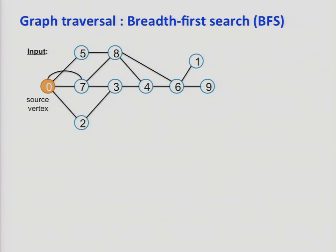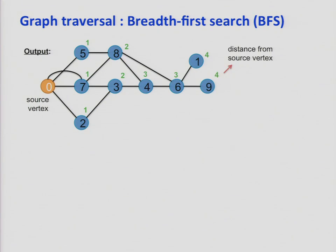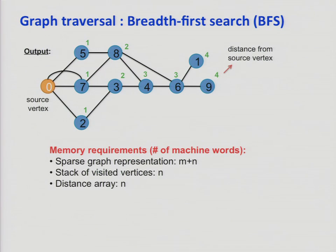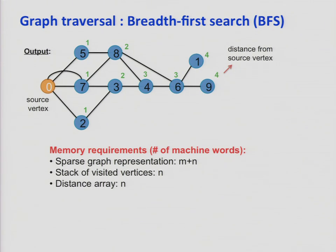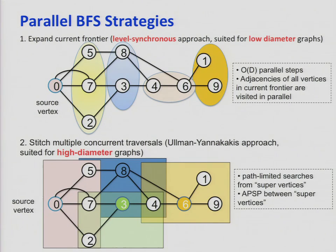A better idea for parallel computing is breadth-first search. You traverse the graph layer by layer — all vertices one hop away are visited before any vertex two or more hops away. The memory requirements match DFS: the input requires O(N+M), you need a stack of visited vertices, and a distance array to track how far you are from the initial point.